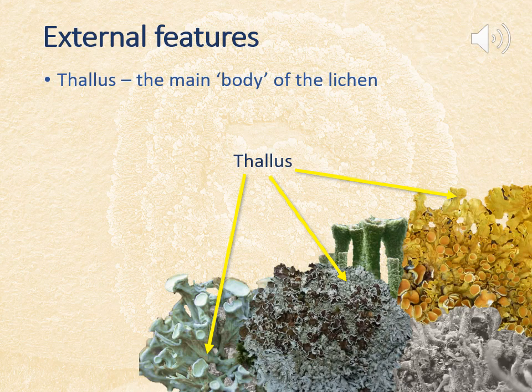There are a number of features on the exterior surface of a lichen that can be used to identify species. Some will need to be magnified, for example viewed with a hand lens. Starting with the main body of the lichen, which is called the thallus — the thallus varies widely in form but can be categorised into five types, which we shall come to later.